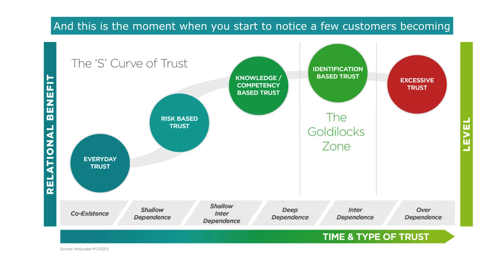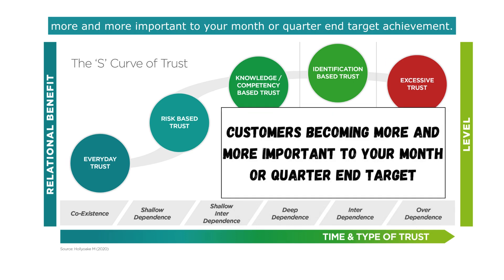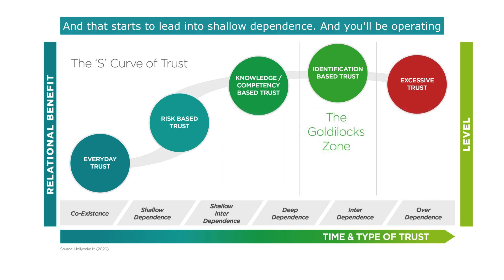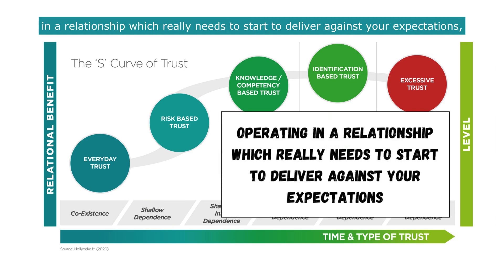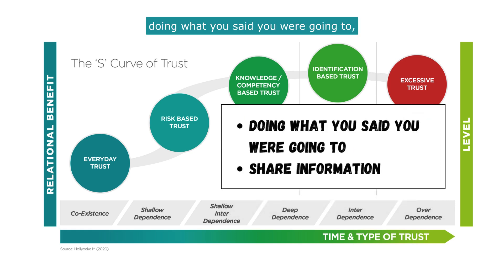This is the moment when you start to notice a few customers becoming more and more important to your month or quarter-end target achievement, and that starts to lead into shallow dependence. You'll be operating in a relationship which really needs to start to deliver against your expectations — doing what you said you were going to do and starting to share information.